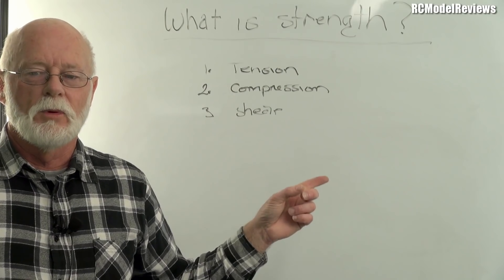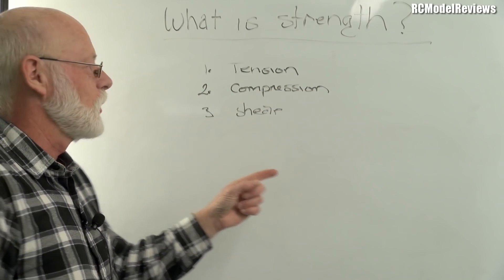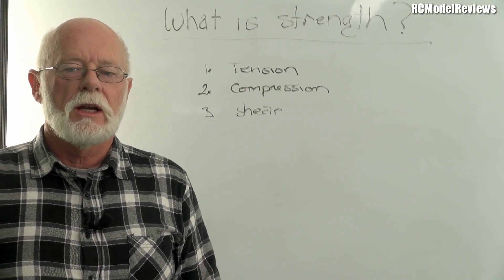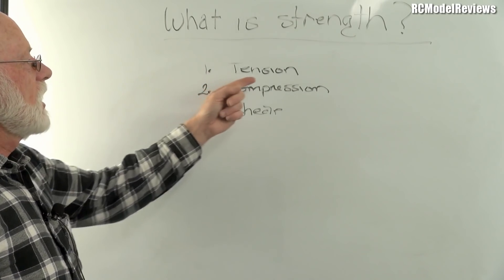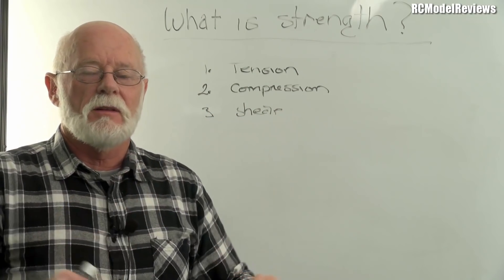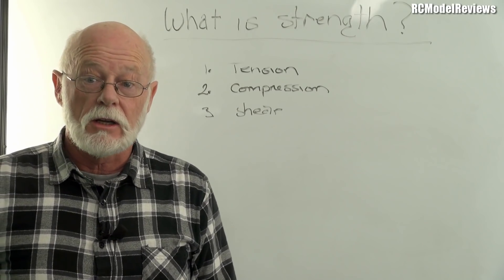Excuse the crappy whiteboard. When we talk about strength, there are a number of different factors, different aspects to strength. The three main ones are tension, compression, and shear. That's because there are different ways of bending stuff, different ways of applying force to a material to see how strong it is.